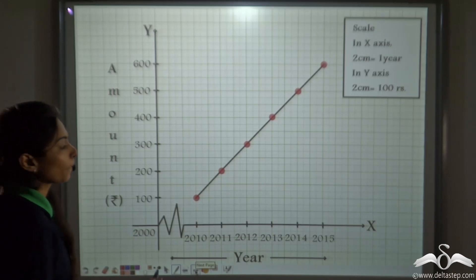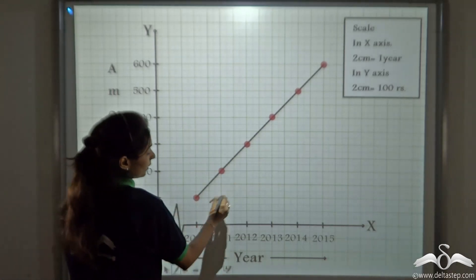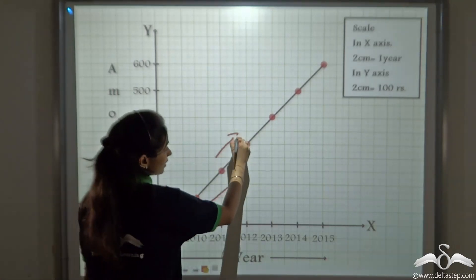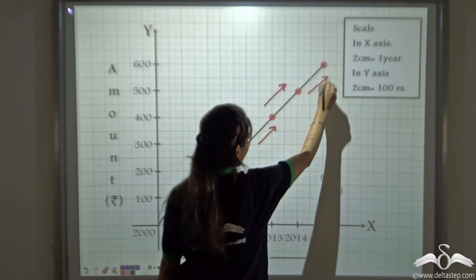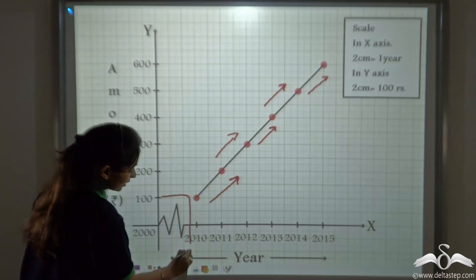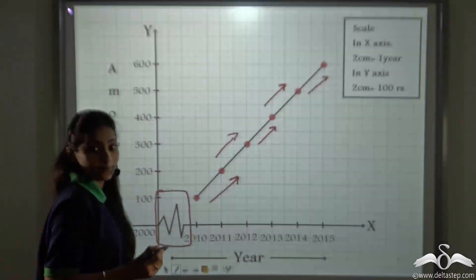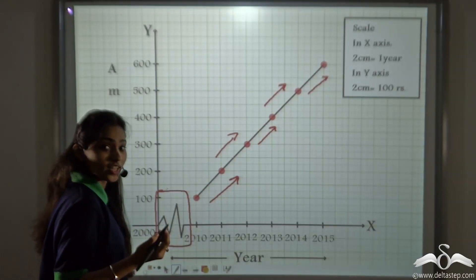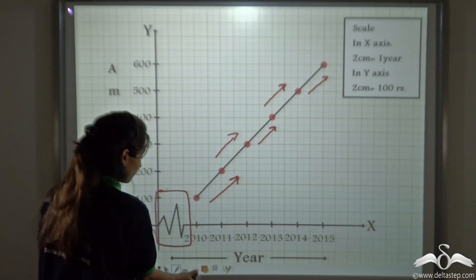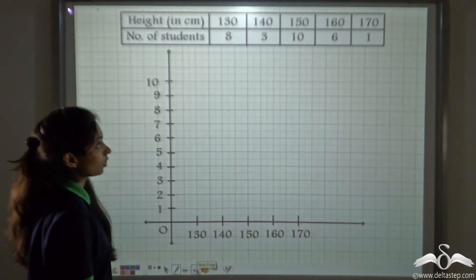Now from the graph, you can say, each year, your pocket money has increased by rupees 100. So now you know the usefulness of this kink. This kink helps us to avoid writing the years of which data is not given.